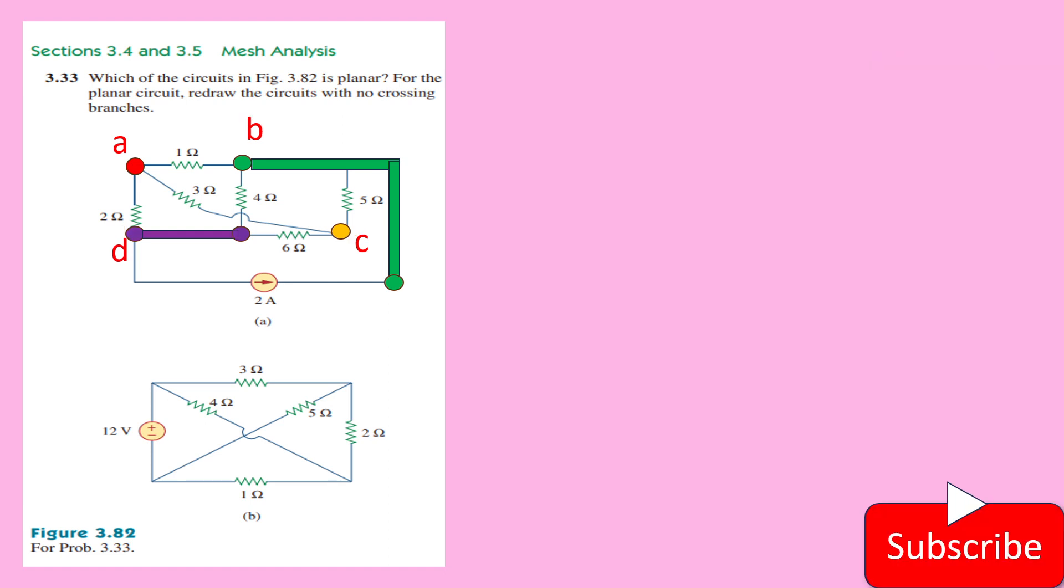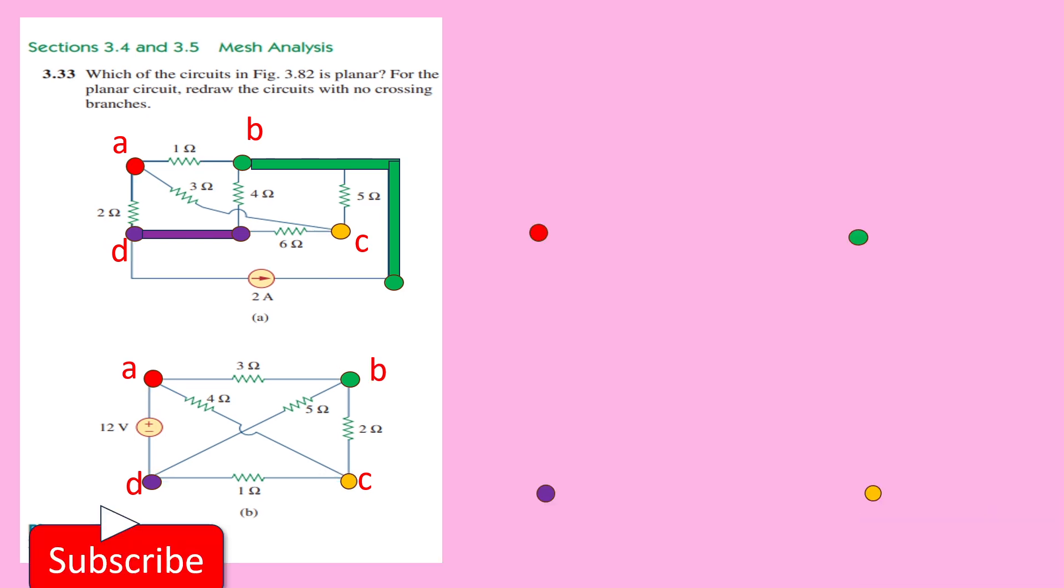Now we move on to the second problem in which we have the nodes A, B, C, D. With this, we are going to redraw the circuit. We mark the nodes as A, B, C, D.